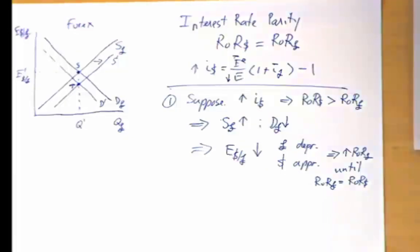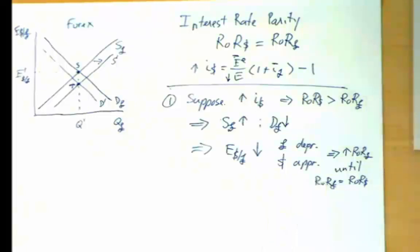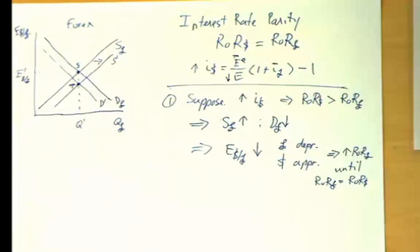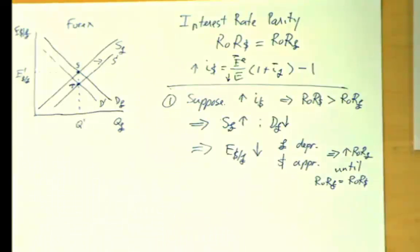Let's consider another scenario. Suppose there is an increase in British interest rates on average — an increase in I-pound — ceteris paribus. What is going to happen to the value of the pound?